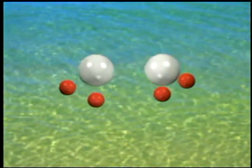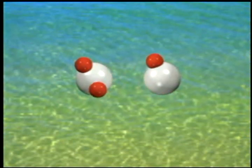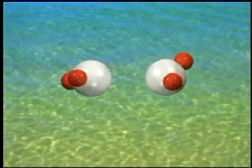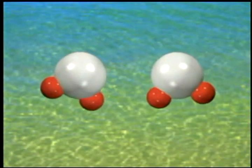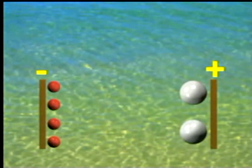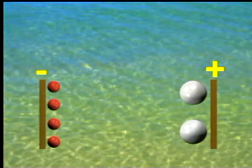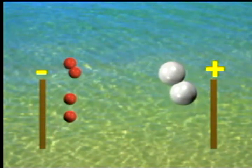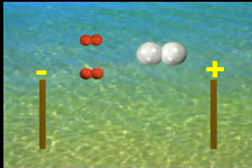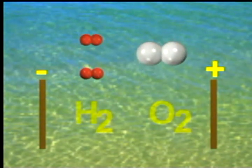Two oxygen atoms join with four hydrogen atoms to form two water molecules. Water can be split into its atomic components — hydrogen and oxygen — by passing an electric current through it. Hydrogen is released to the negative electrode and oxygen to the positive electrode. As a final product, hydrogen becomes hydrogen gas and oxygen becomes oxygen gas.